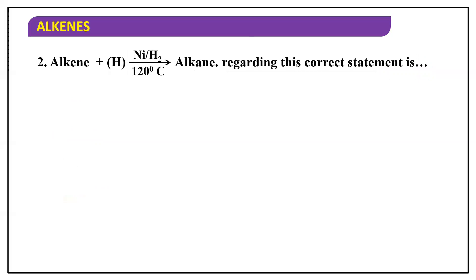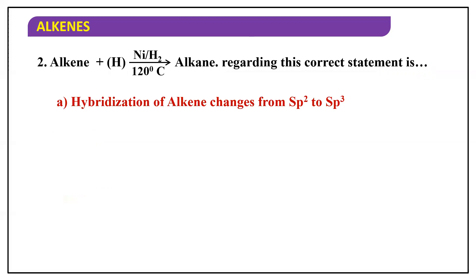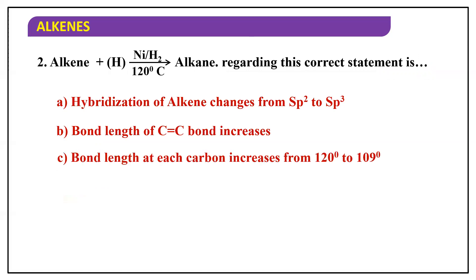MCQ: Alkene + H₂ in the presence of nickel gives an alkane. Which of the following is correct? (a) Hybridization of alkene changes from sp² to sp³, (b) bond length of C=C increases, (c) bond angle at each carbon increases from 120° to 109°, or (d) all of the above.